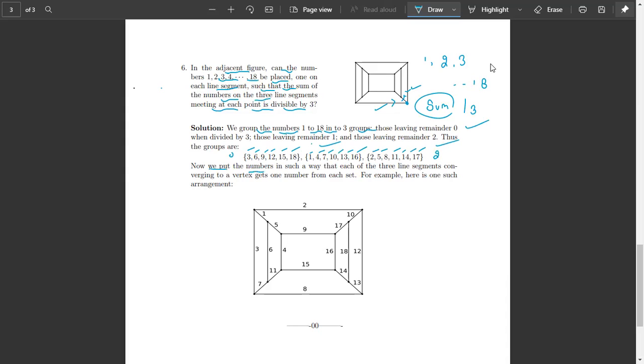Now we put the numbers in such a way that each of the three line segments converging to a vertex get one number from each set. Like here the numbers are 8, 3, and 7. If we sum it, 8 plus 7 plus 3 equals 18, and it is divisible by 3.